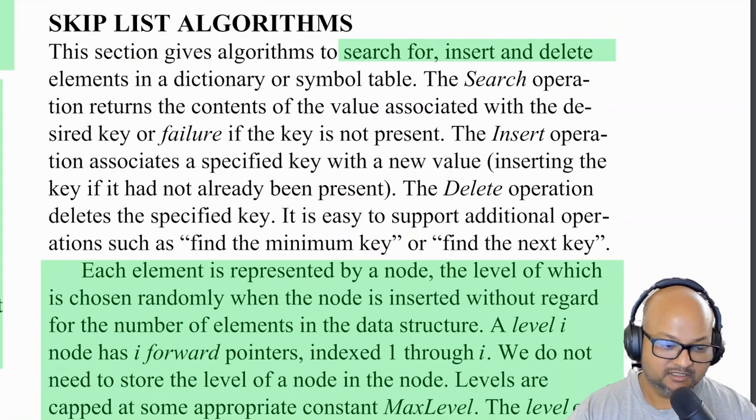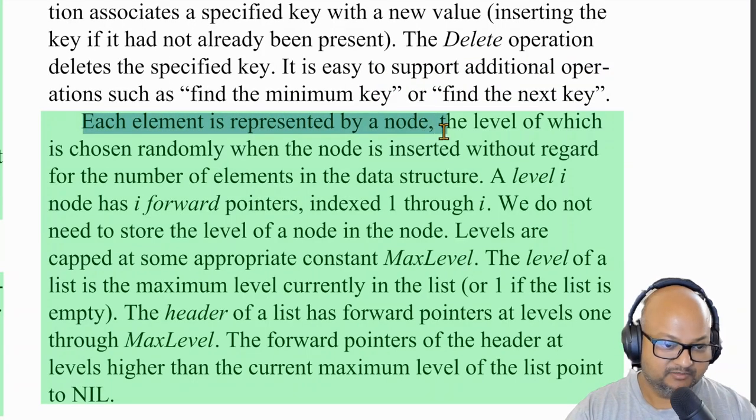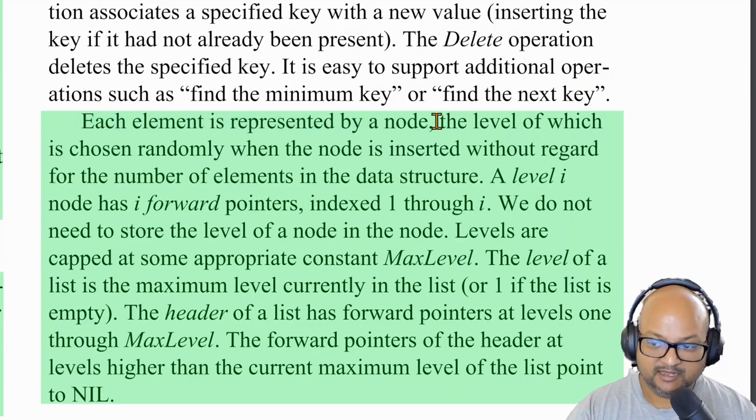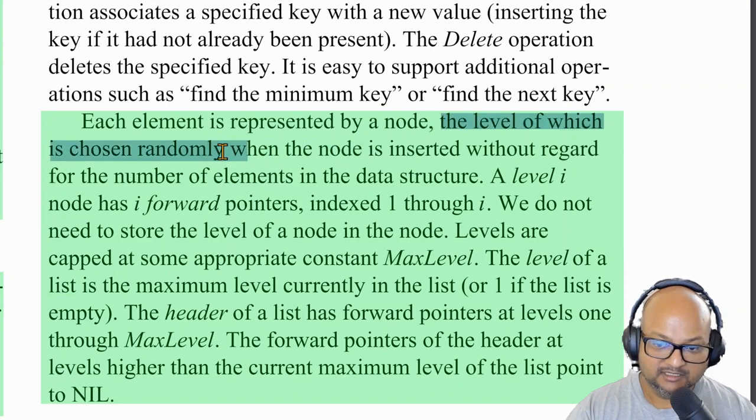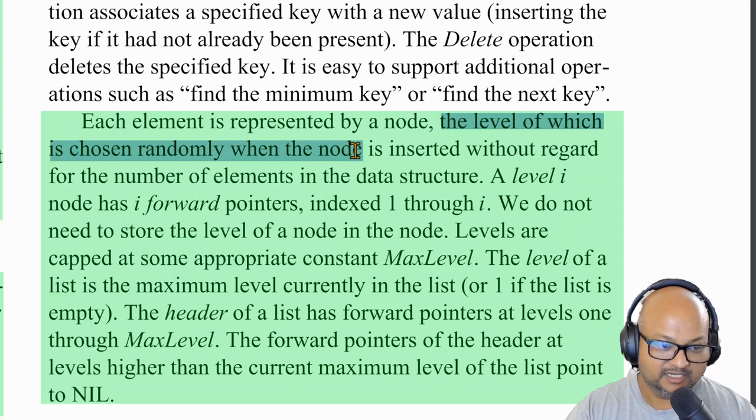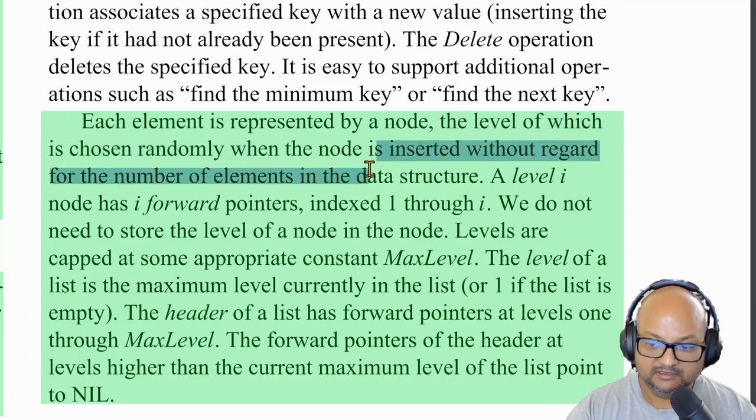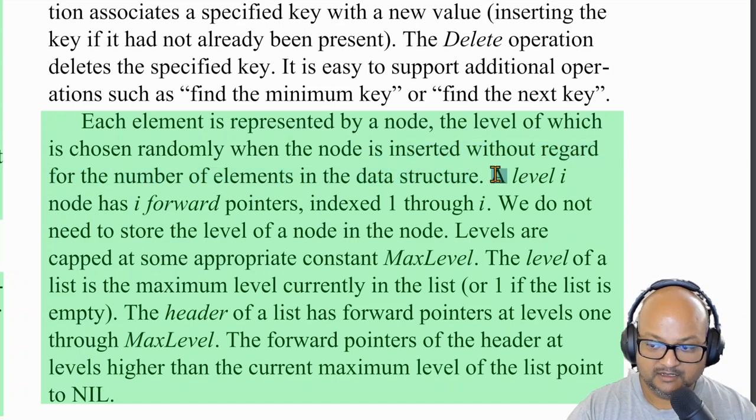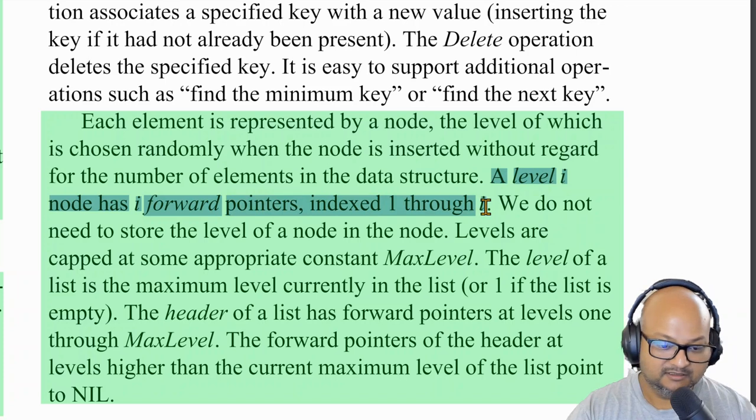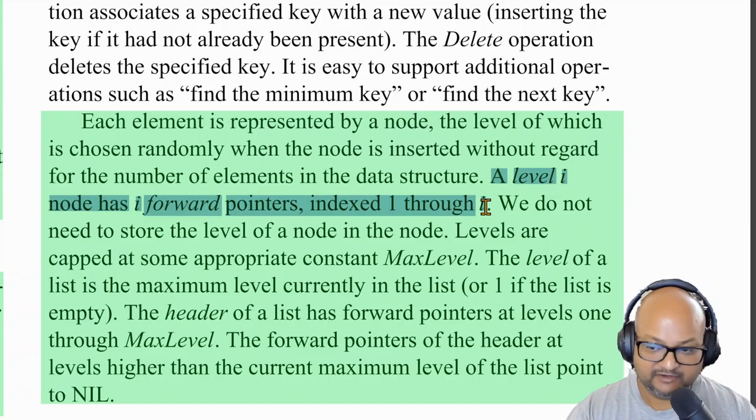Let's look at what the search, insert, and delete operations for skip lists look like. Each element is represented by a node. And like we just talked about, the level of a node is chosen randomly when the node is inserted. And this is independent of the total number of elements in the data structure. A level i node will have i forward pointers where the i-th one points to the element 2 to the power of i ahead of it.